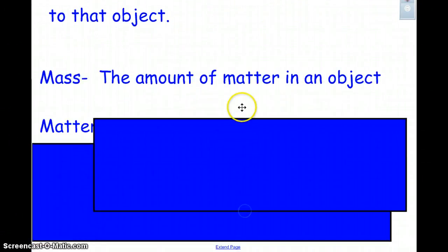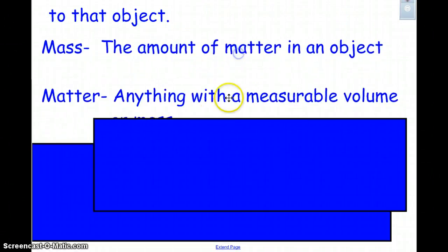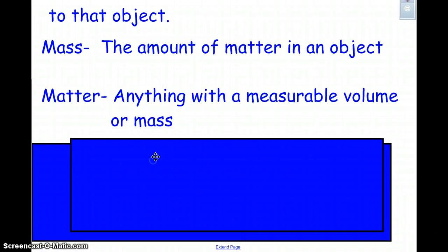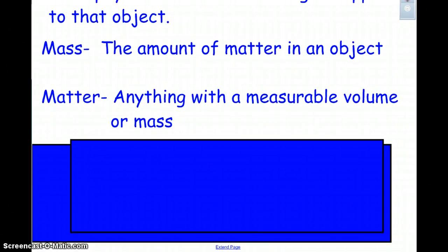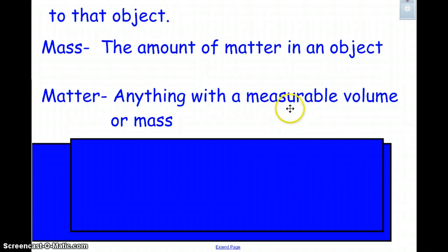In order to understand this, you're going to need a refresher on what mass is and what matter is. Mass is the amount of matter in an object and matter is anything with a measurable volume or mass, anything that takes up space.